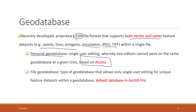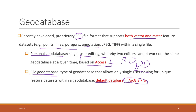The current version is called the file geodatabase, which is no longer based on Access but is still a type of relational database. This is the default database in ArcGIS Pro. Every time we create a project in ArcGIS Pro, a file geodatabase is created for us automatically. It only allows a single user to edit or access that geodatabase.